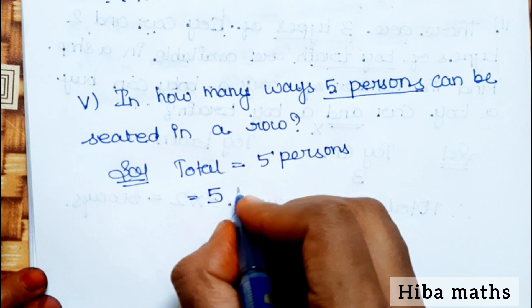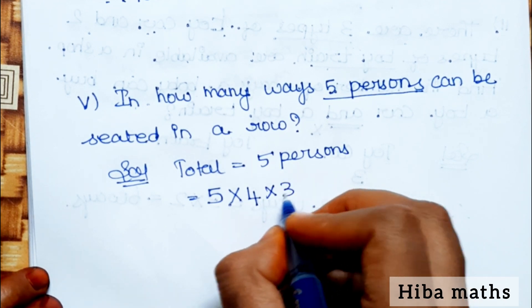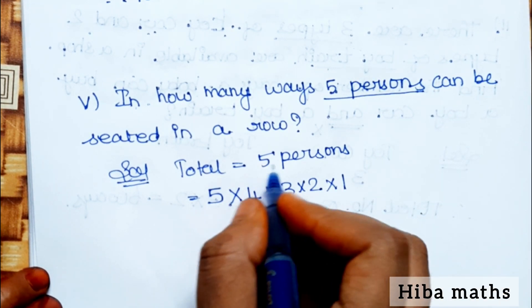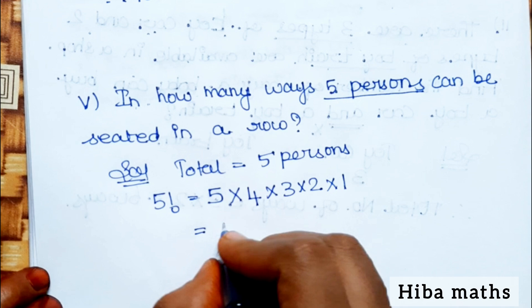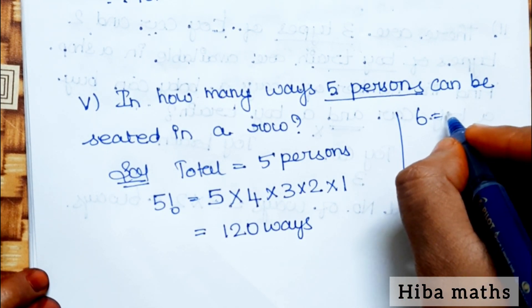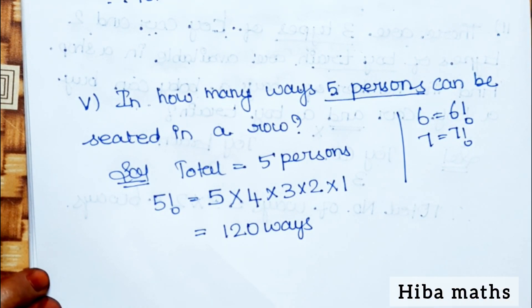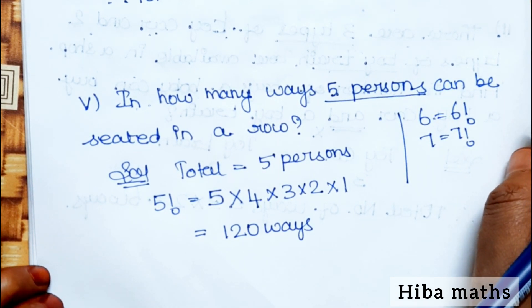Total number of ways is 5 into 4 into 3 into 2 into 1, which equals 120 ways. 5 persons can be seated in 120 different ways. Thank you so much for watching.